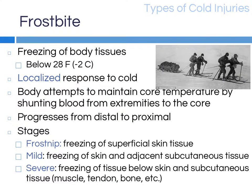Frostbite is the actual freezing of tissues and is a local response to cold, rather than hypothermia's global response. Human tissue freezes when it reaches temperatures below 28°F. Frostbite results as the body attempts to keep core essential organs warm by shunting blood from the extremities to the core, resulting in local loss of blood flow and warmth to the extremities. Frostbite progresses from distal to proximal for this reason.